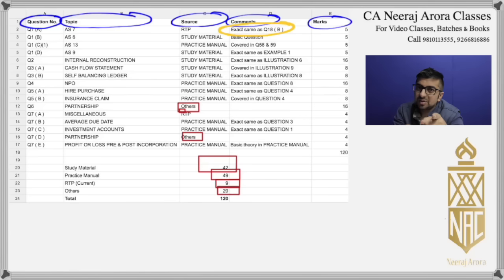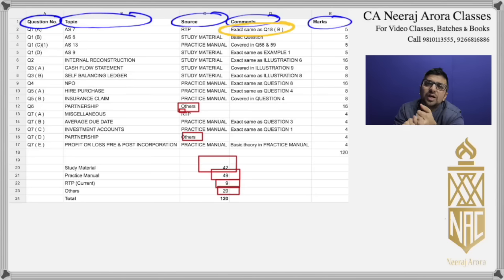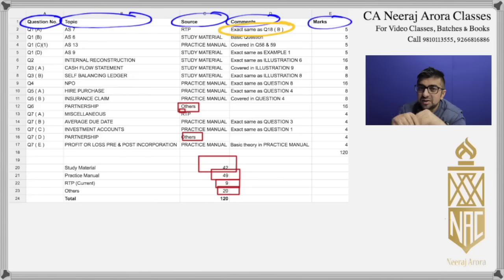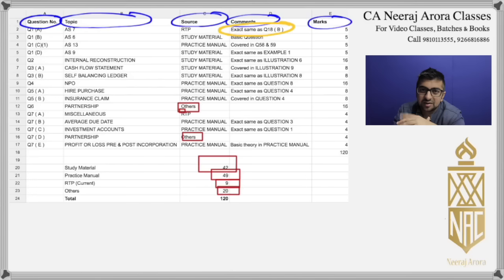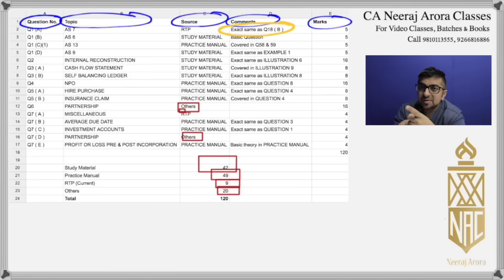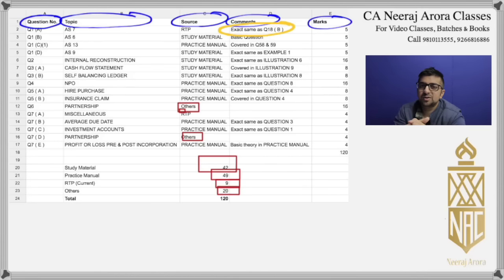Think about it — there are 120 numbers in total. 100 are compulsory and 20 are optional; we don't have to attempt all of those. Question 6 and Question 7 — just think over it. There are 100 numbers. If you look at the paper carefully, the total is 100 numbers. Think about it.